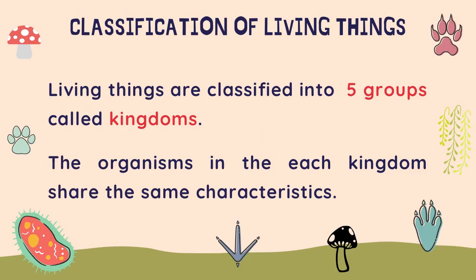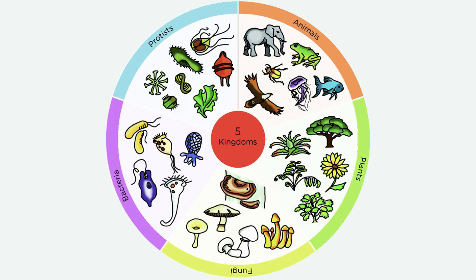Living things are classified into five groups called kingdoms. The organisms in each kingdom share the same characteristics. Here in this picture we can see the five kingdoms: the animals in the animal kingdom, the plants, the fungi in the fungus kingdom, the bacteria in the monera kingdom, and the protist in the protist kingdom.